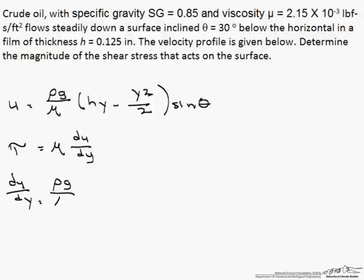And this is a relatively simple integration: rho g divided by mu times sine of theta, since all those are constants, they are not function of y, times h minus y.